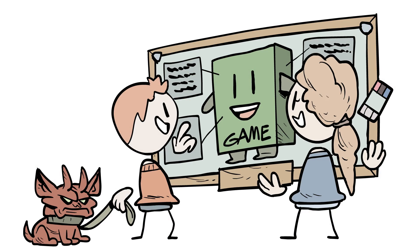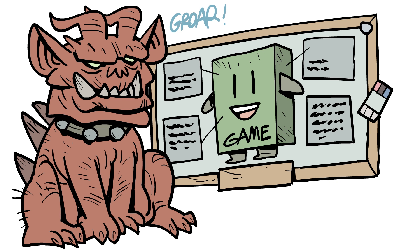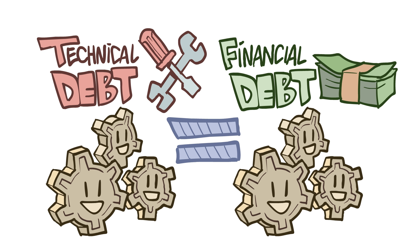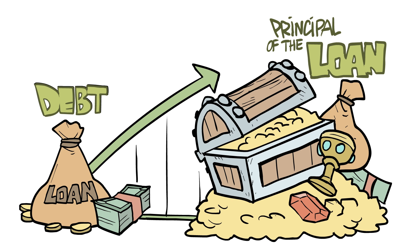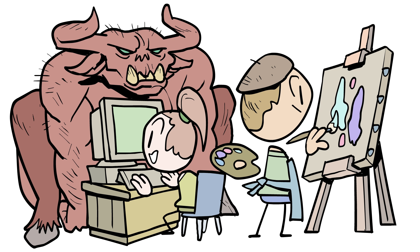Technical debt is what happens when problems caused early on in development aren't dealt with until later, causing them to be significantly more difficult or expensive to address. Because technical debt works the same way as financial debt — if a loan isn't repaid, it continues to compound until the principle of the loan ends up being much higher than the original amount.